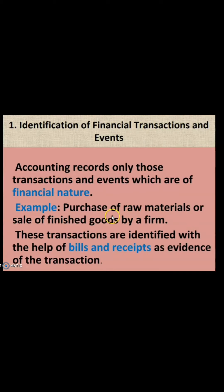Let us discuss the seven points one by one. The first one is identification of financial transactions and events. In this, we have to first of all identify whether the transaction entered in a business is of financial nature. Accounting records only those transactions and events which are of financial nature. For example, a mother's love for her baby — can that be a financial transaction? No.